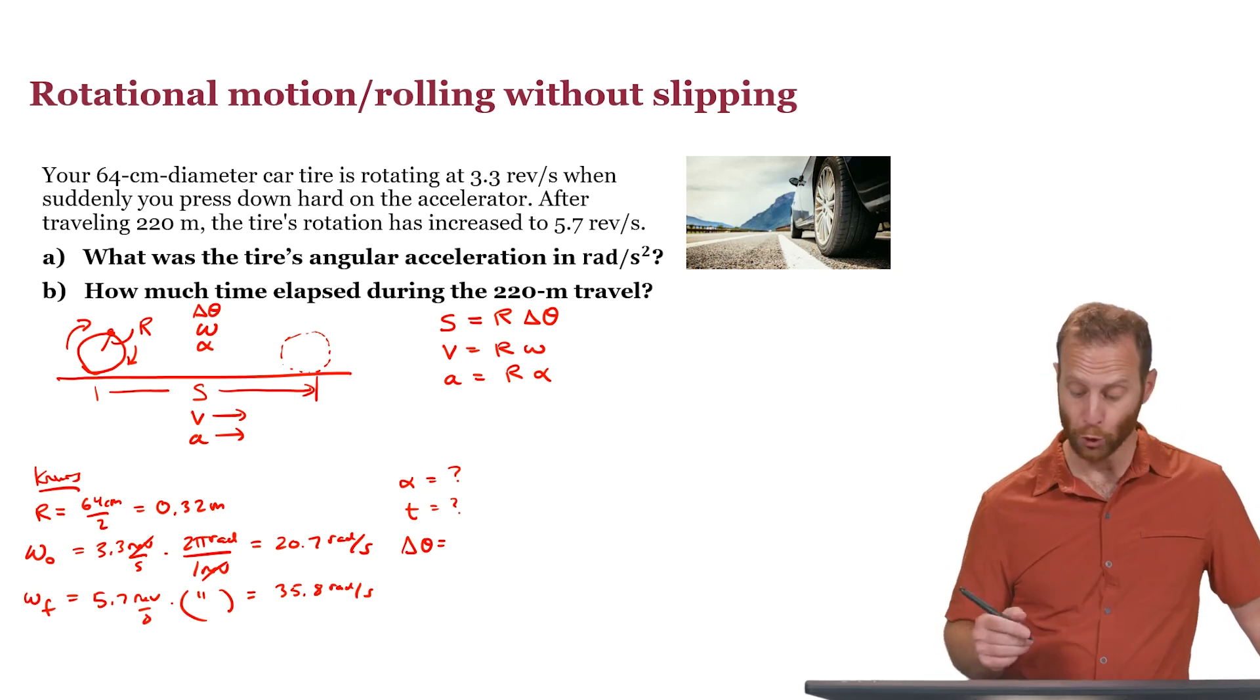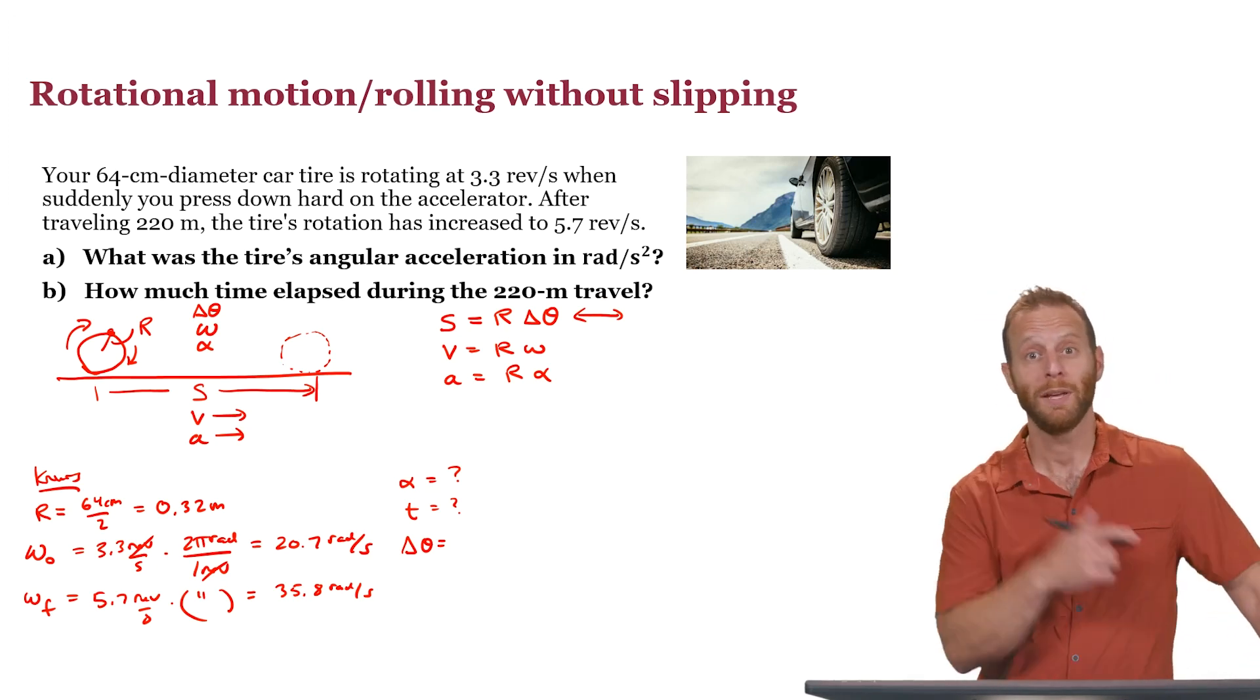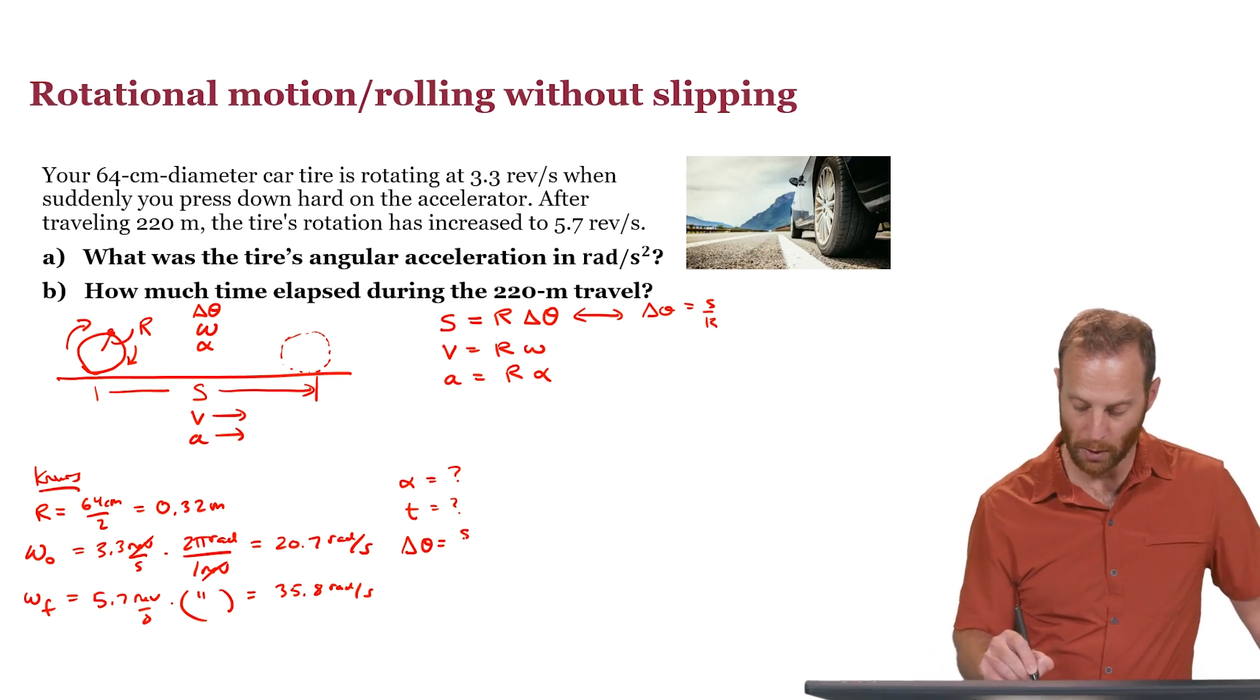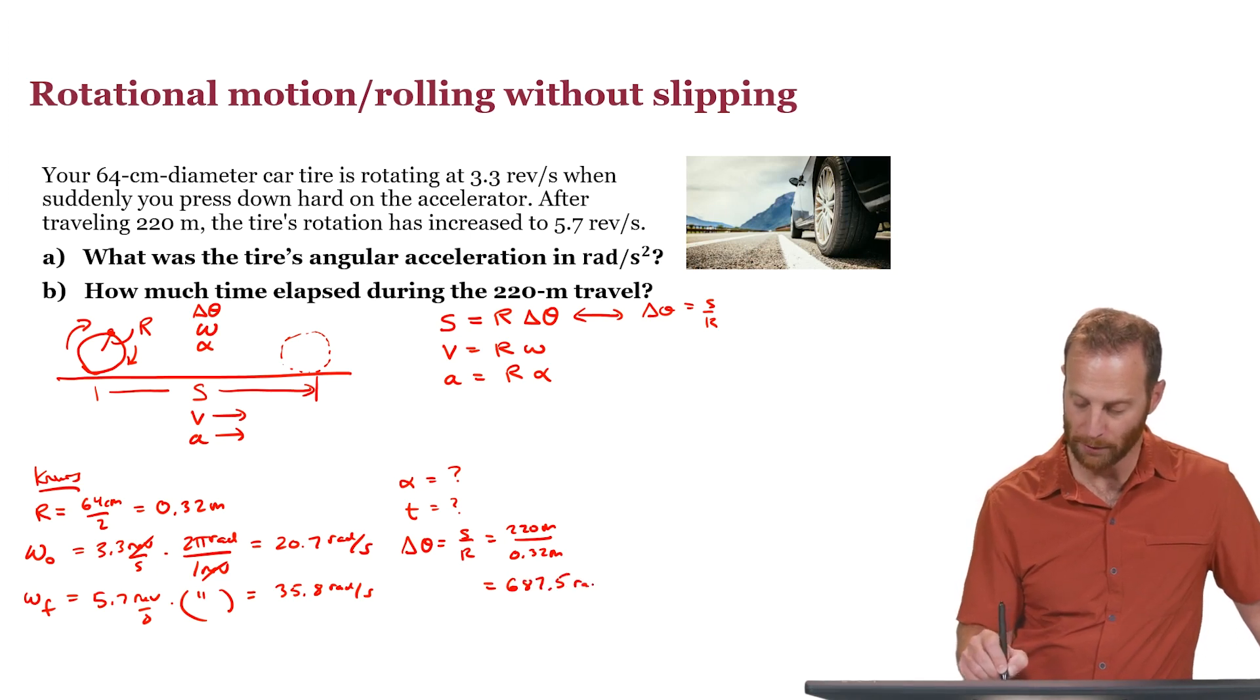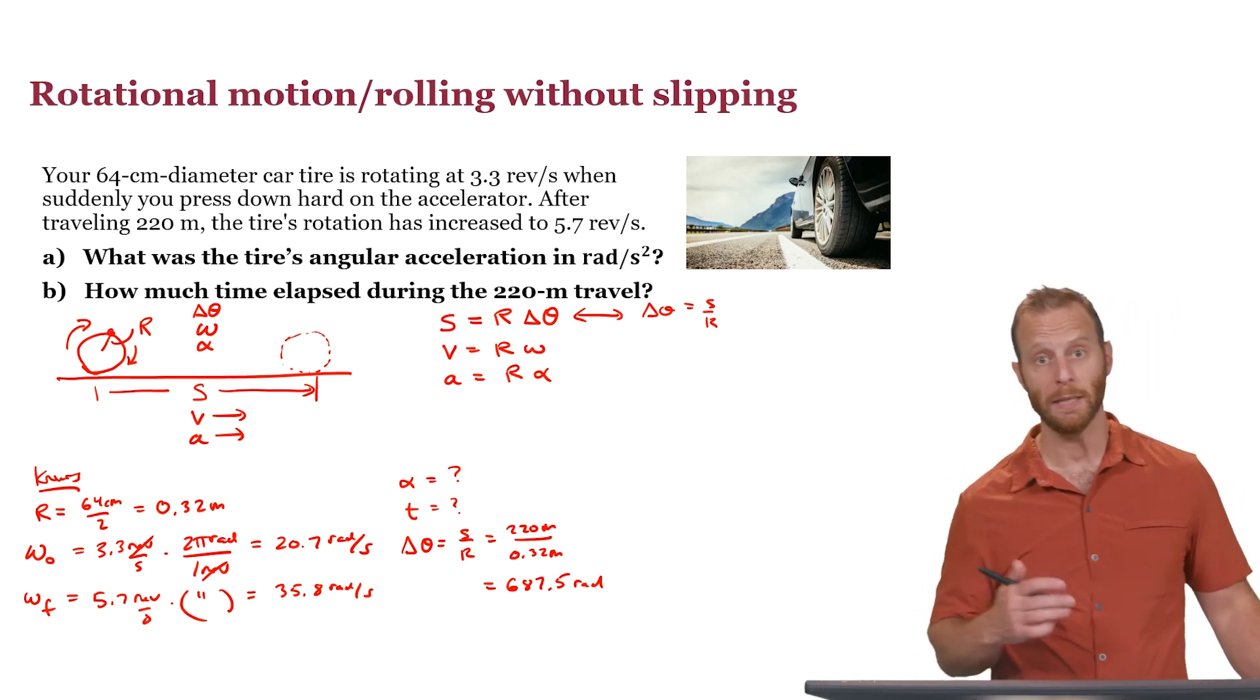And we have a change in the angle. That is something that we can figure out because we know how to relate linear distance with angular displacement. Delta theta is s over r, so 220 meters divided by the radius of 0.32 meters gives us 687.5 radians. So we've got our knowns listed and our unknowns indicated.